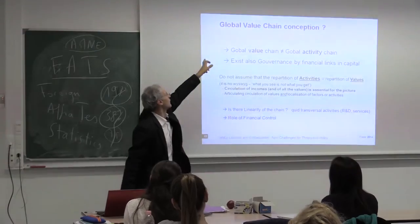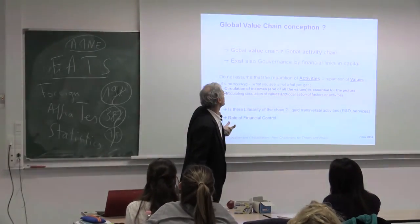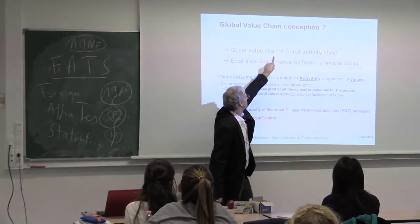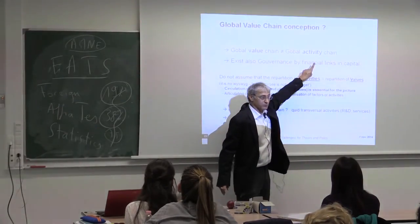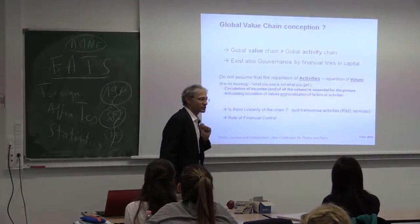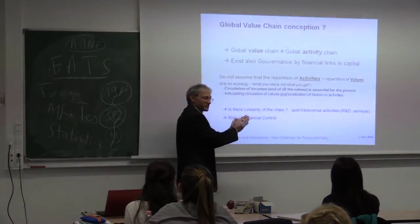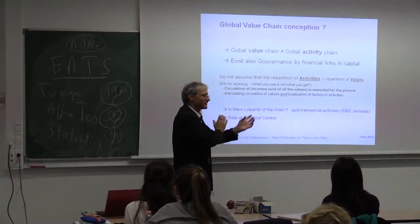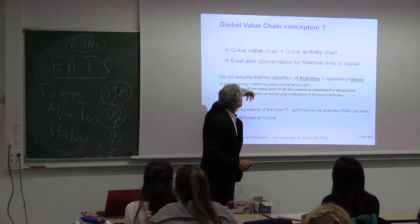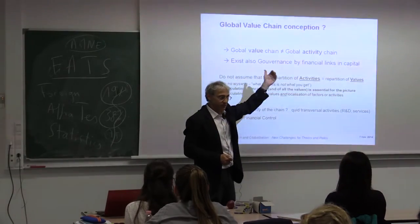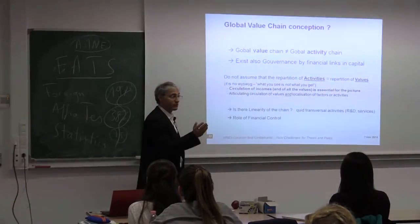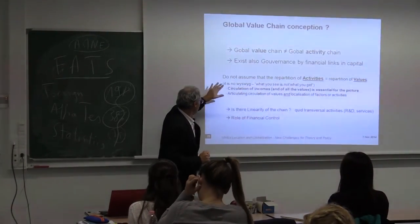Regarding the theory of global value chains: I want to challenge the idea that global value chain is the same as global activity chain. The value is not at the place where you have the activity, and the concept refers too much to a Ricardian view of production. There are transfers and power relations. Also, behind the value chain framework is the kind of governance — they list different kinds of governance but omit governance by financial links in capital, as in Gereffi and Sturgeon, for example.